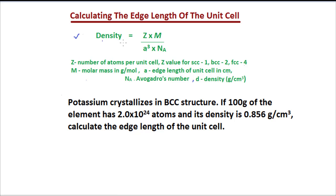This is the density formula given. Density is equal to Z, where Z is the number of atoms per unit cell. For different unit cells, Z value is also different. Z value for SCC is 1, for BCC structure is 2, for FCC structure is 4.